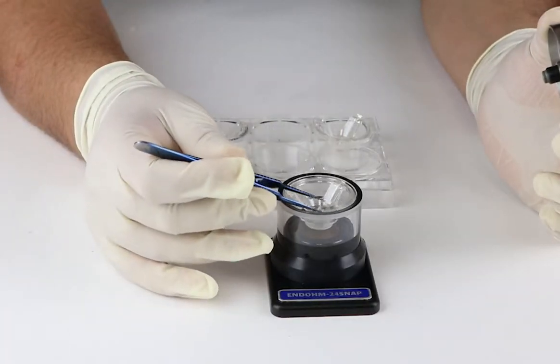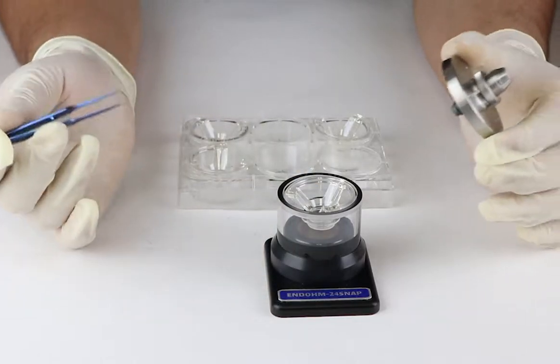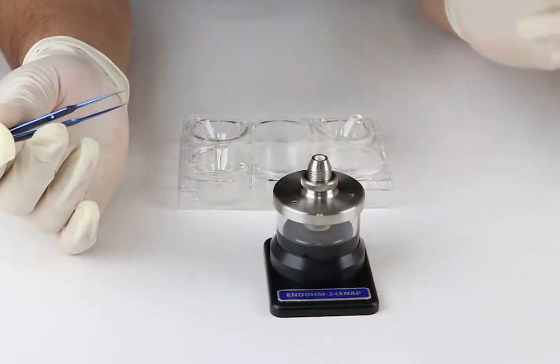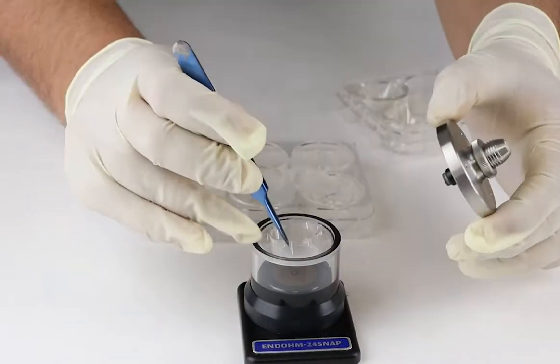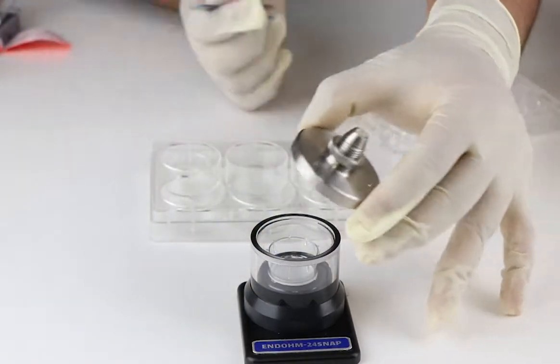Cell culture inserts which stay hung in the well plate are known as hanging inserts. The standing inserts stand in the well of the well plate.